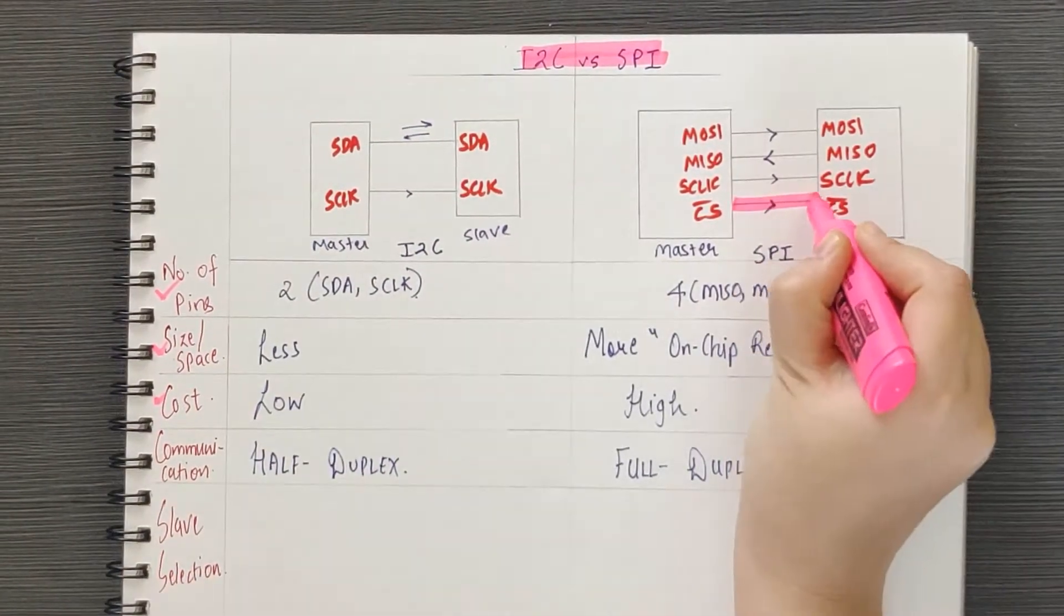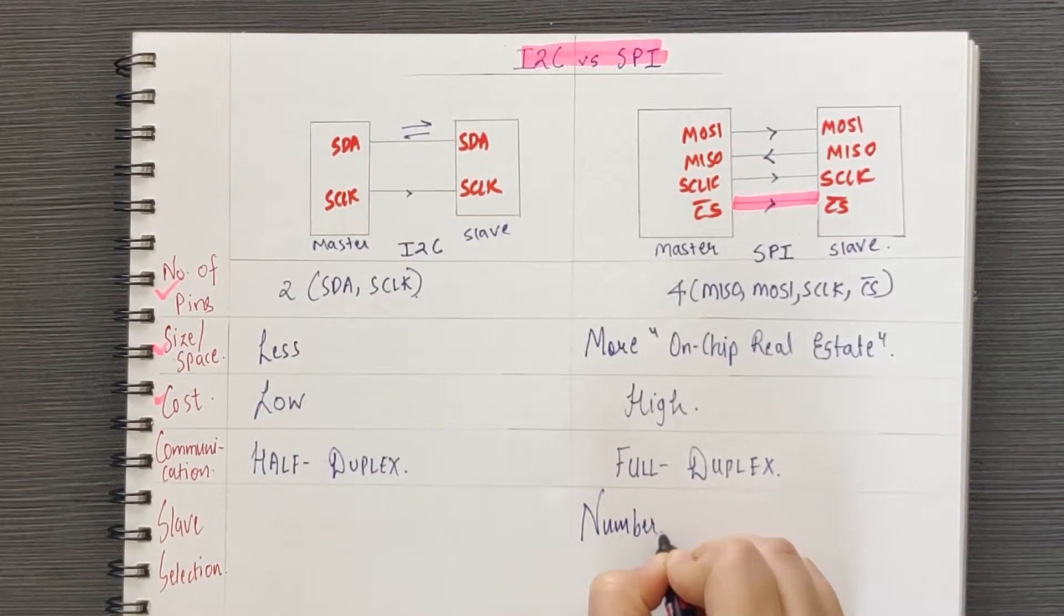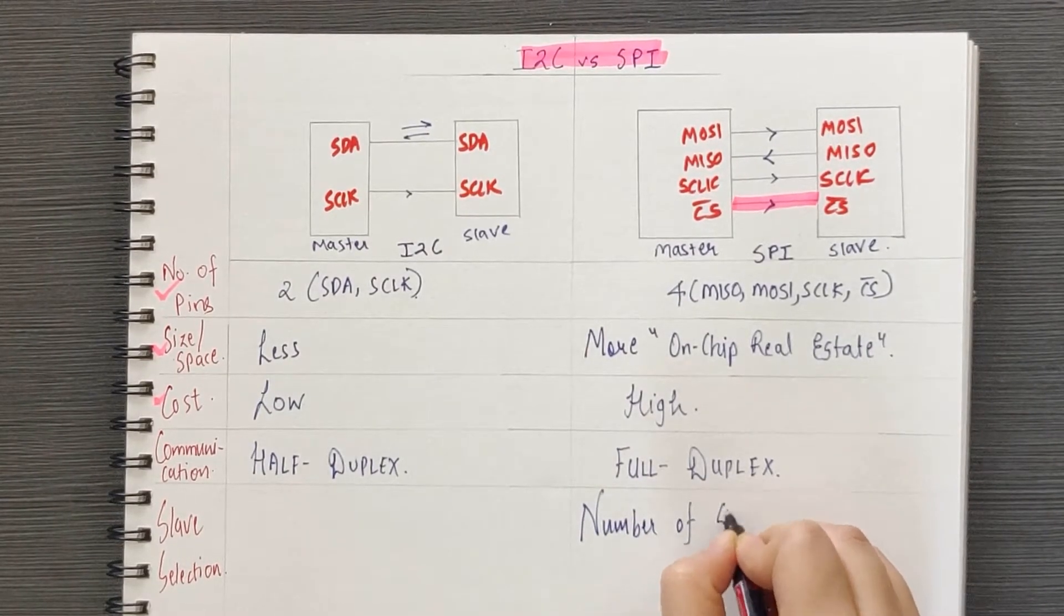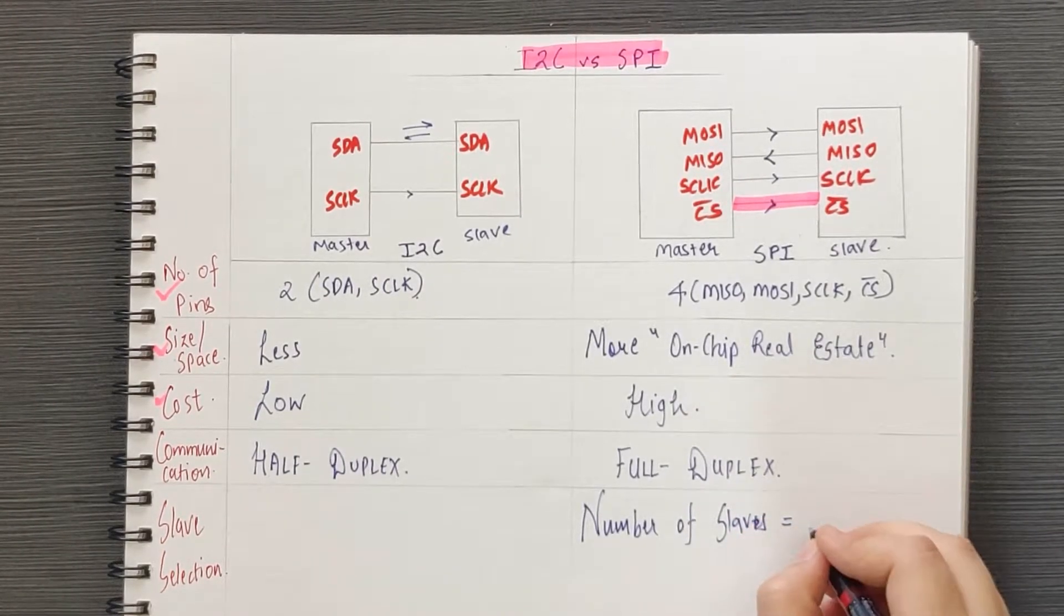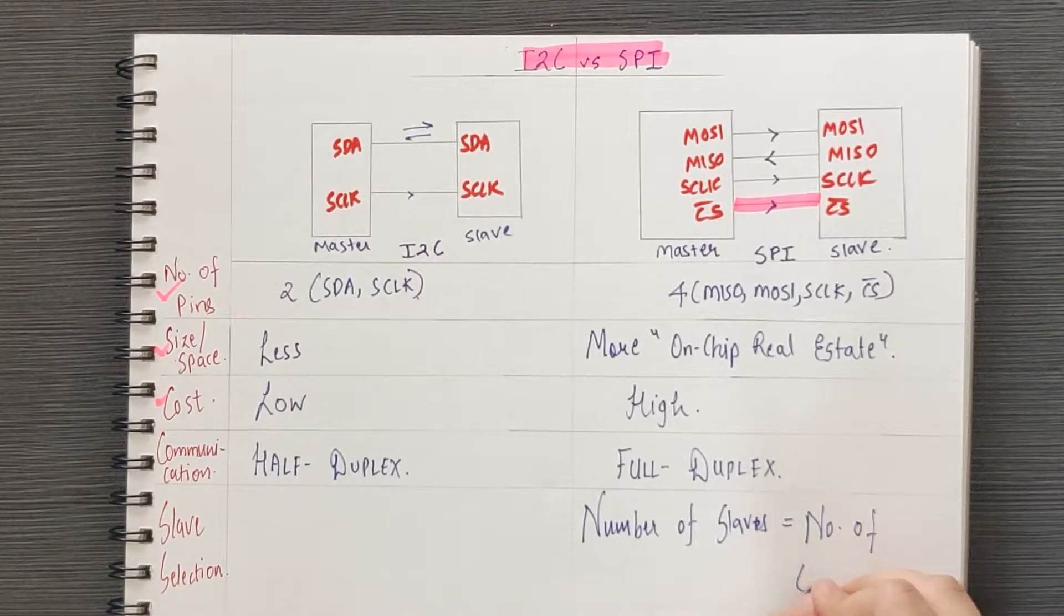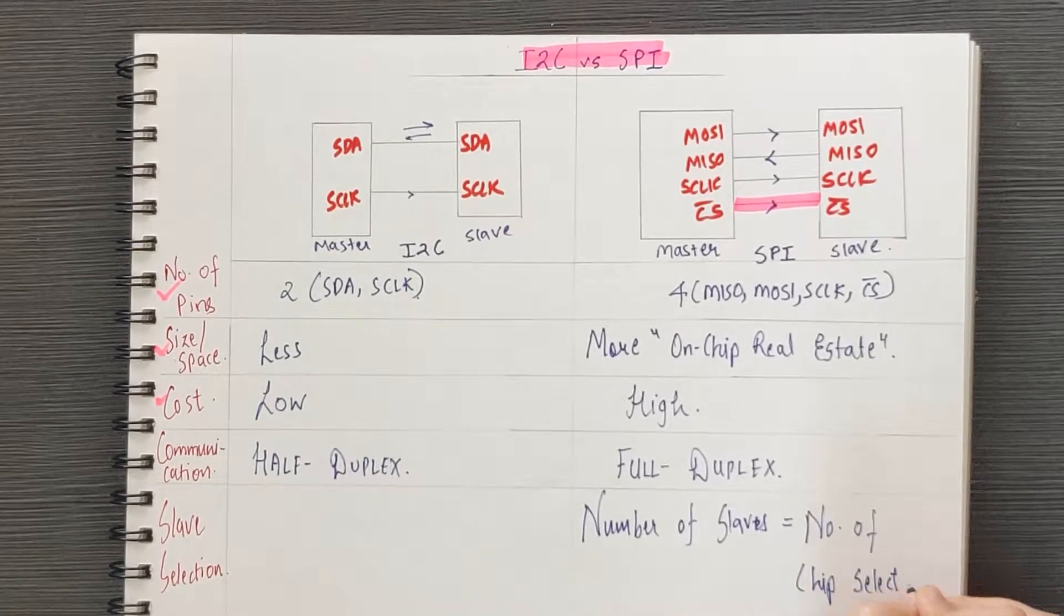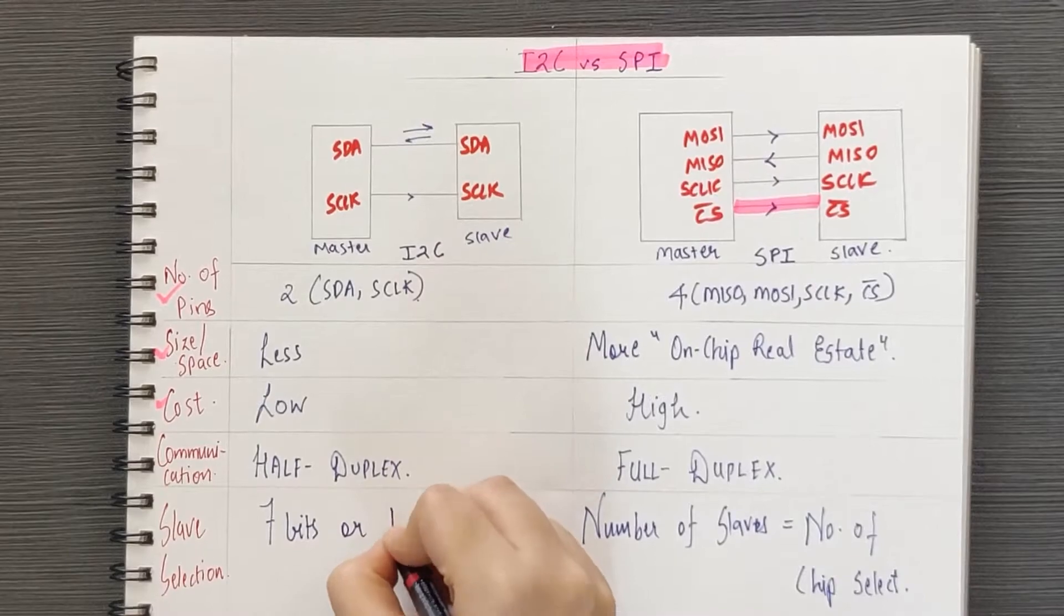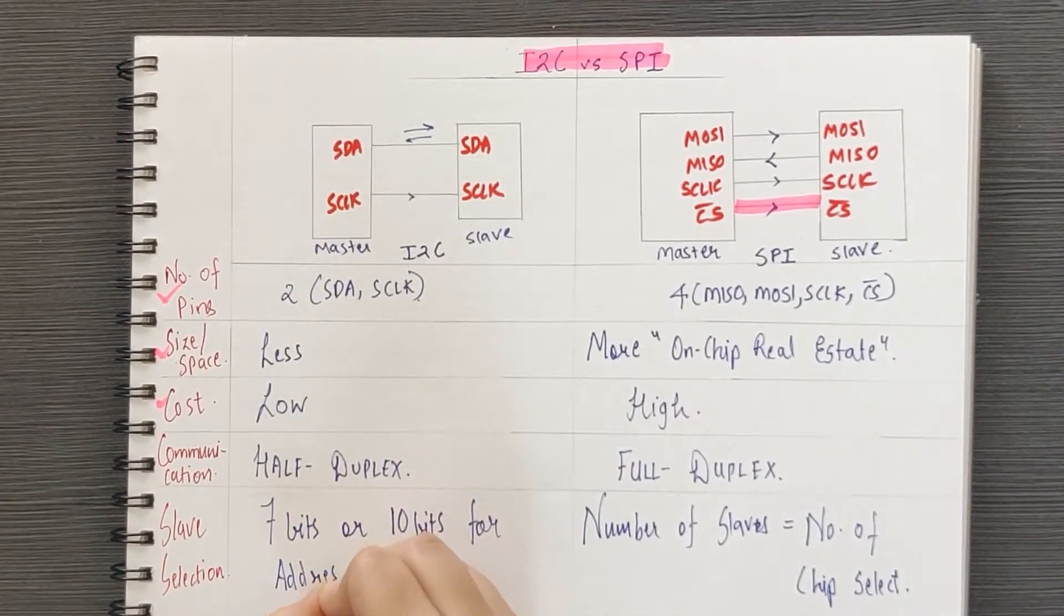In case of SPI, the chip select line allows the master to select the desired slave for communication. Thus, the number of slaves is equal to the number of chip select lines, which means more space and more cost. Due to absence of such a pin in I2C, the I2C master transfers either 7 bits or 10 bits long address over the SDA line to communicate with a particular slave. So it has its own addressing scheme.